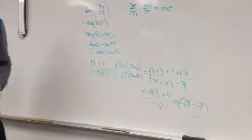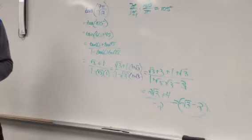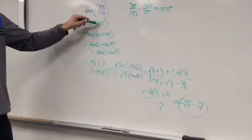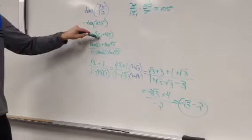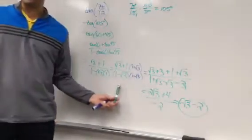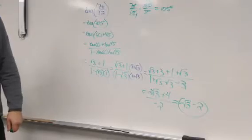That would be how I would do the tangent of 7 pi over 12. Change it to degrees, avoid using 30s, and then multiply by the conjugate to get the radical out of the denominator. That is very helpful.